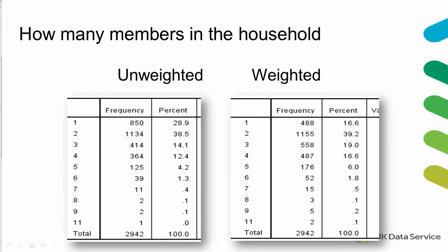Importantly, results can vary between weighted and unweighted analyses. Here we have the frequencies for a variable indicating household size. The unweighted results indicate that nearly 30% come from a one-person household. In contrast, the weighted results suggest it's nearer 17%. If we do not use weights when analysing survey data, results might not relate to our population of interest.